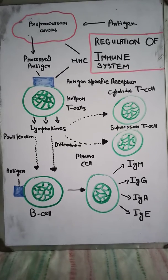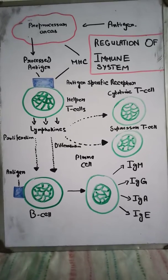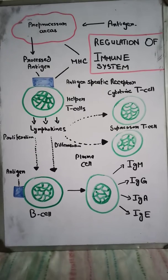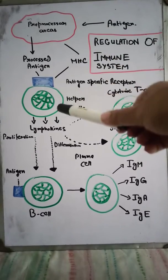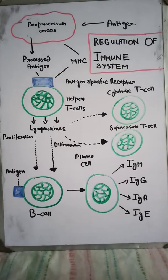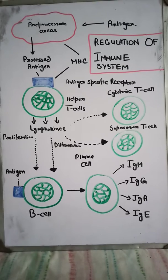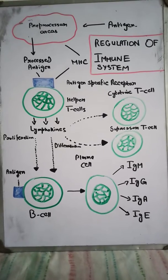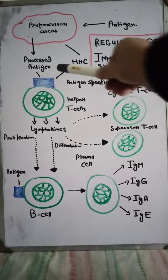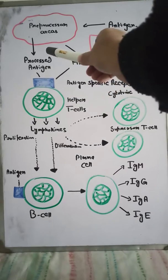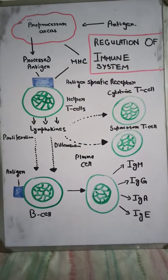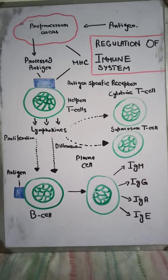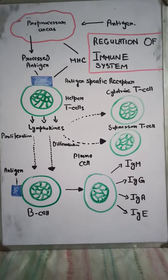We have preprocessor areas of the antigen that can bind to the helper T-cells derived from cell-mediated immunity. The antigen binds to the helper T-cells as a processed antigen through the major histocompatibility complex (MHC), which is a protein present on macrophage cells.